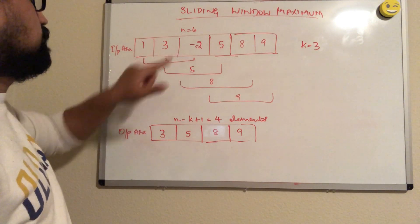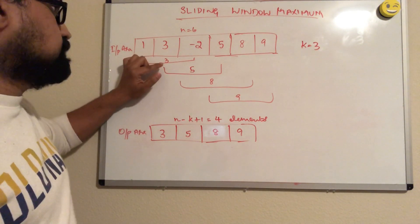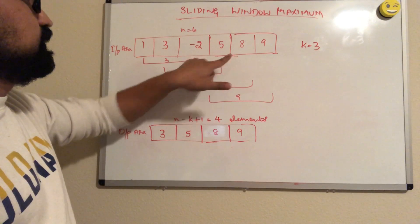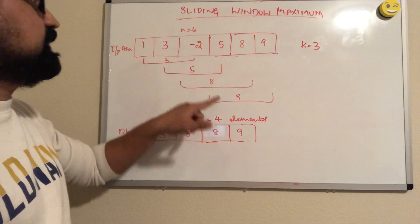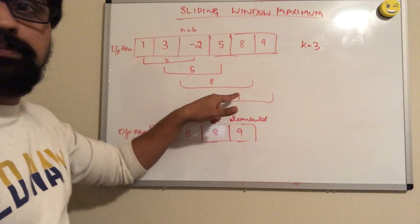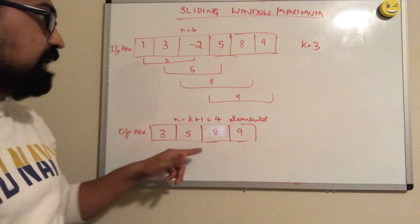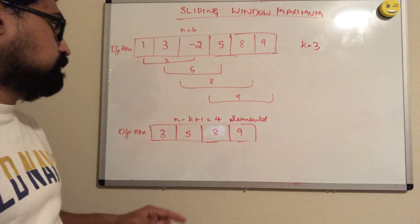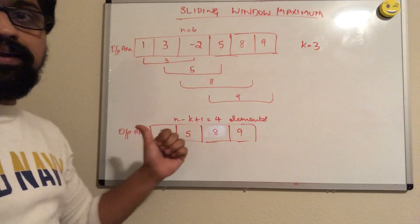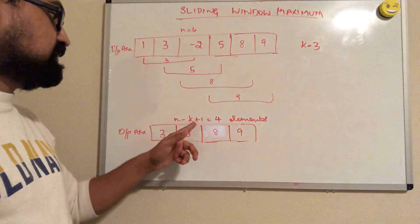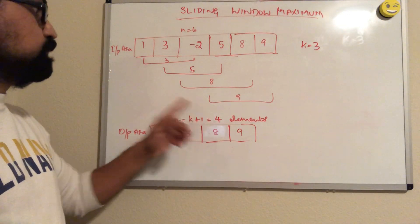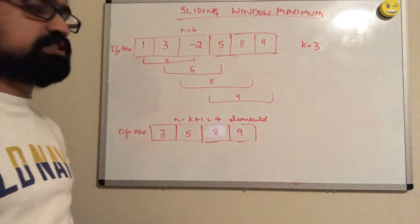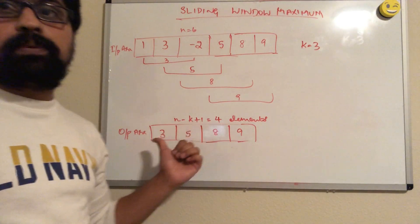So if you take this window for example, the maximum is 3. If you take this window, the maximum is 5. Here, the maximum is 8. And in the last window, the maximum is 9. So we have to return these maximum elements as the output. The output will have n minus k plus 1 equal to 4 here, so we have four windows and four elements.